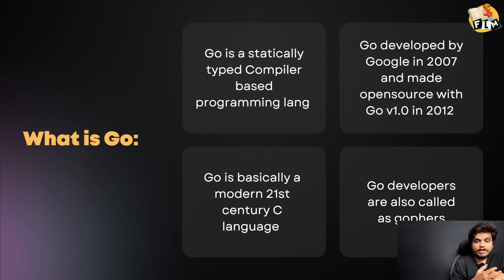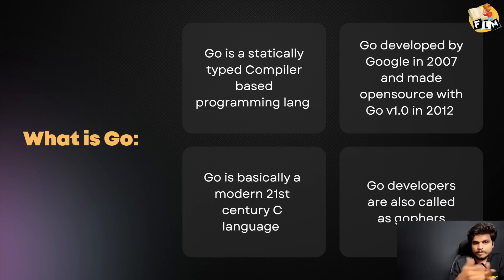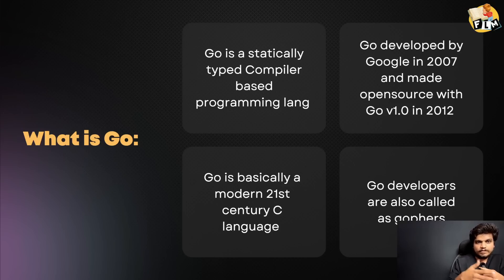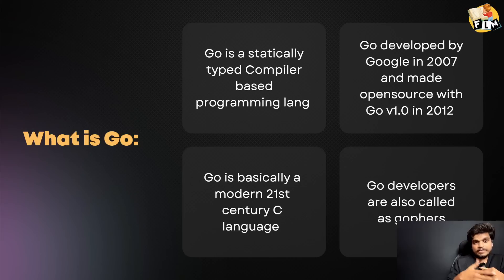When we declare a variable in Go, the type — whether it is Integer, Float, Double, String, or Character — is determined at compile time. C language and Java language are examples of statically typed programming languages.